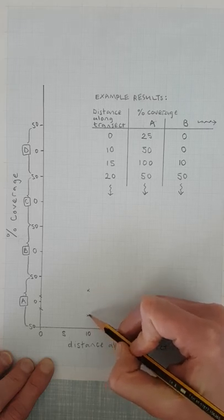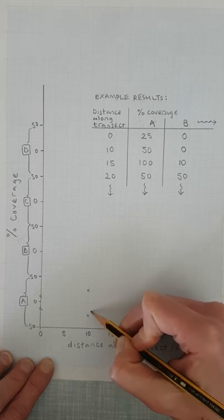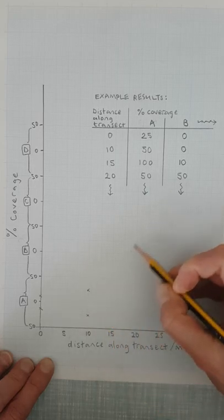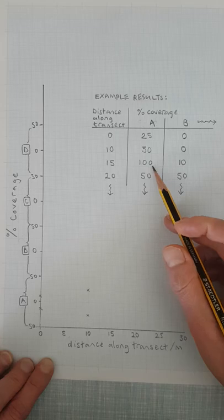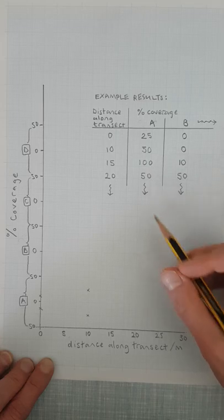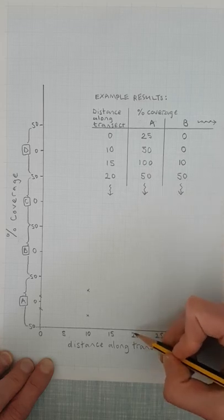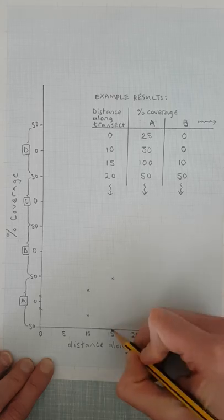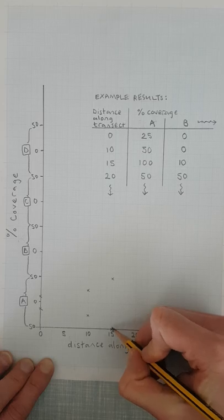At 15 meters there's 100 coverage, so that's easy. At 15 meters we have to go up to 50 and then down to 50, and that there represents the whole quadrat being covered with A at that point.